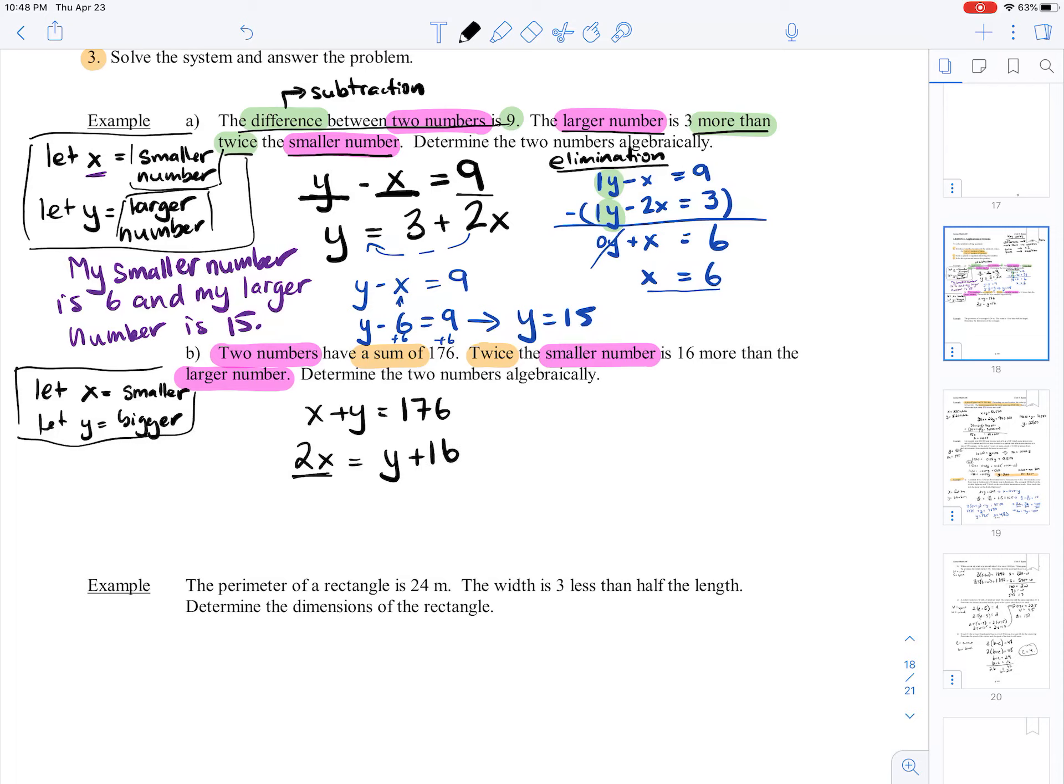So remember I said more than - it doesn't quite always imply addition or subtraction. You could have written this as 2x minus 16 equals y, and that would have been a valid equation. You just have to think about which of the numbers needs to get bigger to meet the other number.